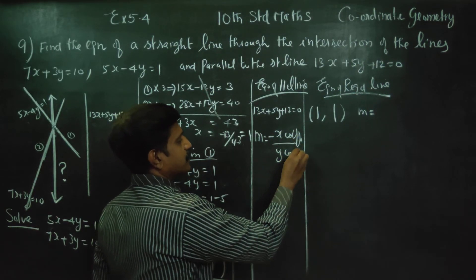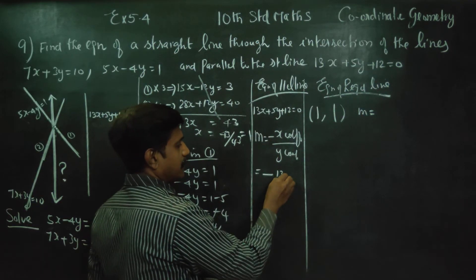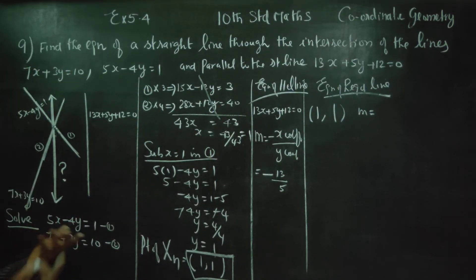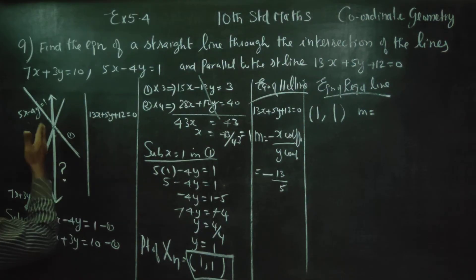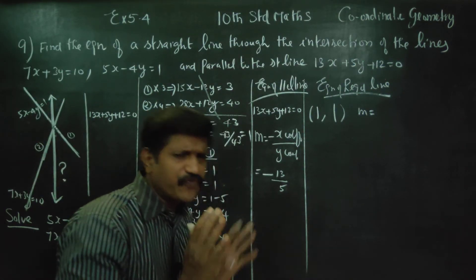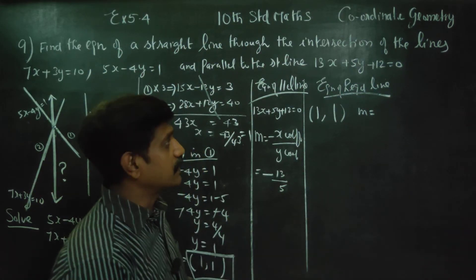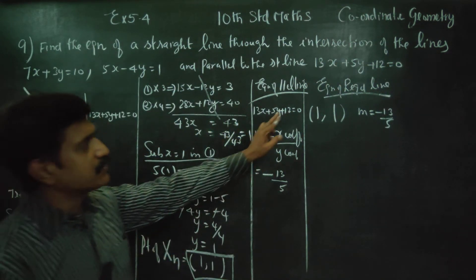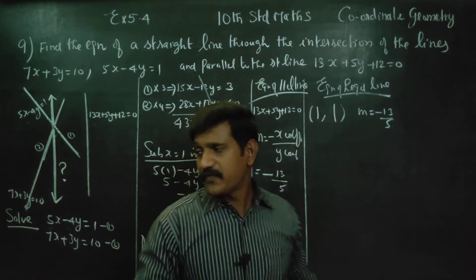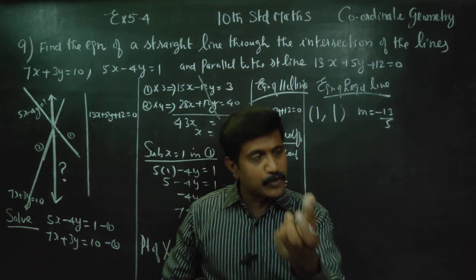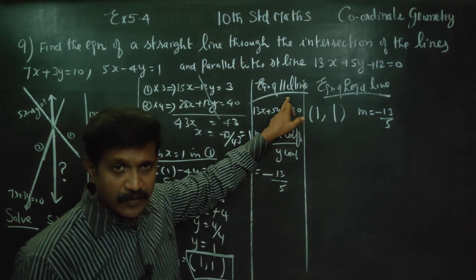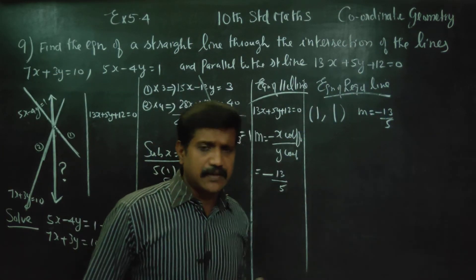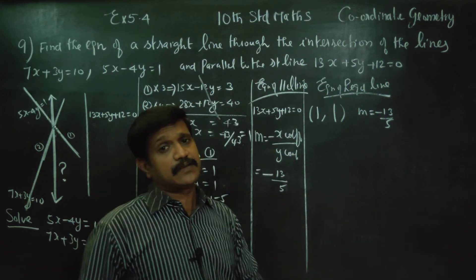For the parallel line 13x plus 5y plus 21 equals 0, the x coefficient is 13 and the y coefficient is 5. The slope is already known — for parallel lines, the slope is very close; parallel lines have the same slope. So the required line's slope is minus 13 by 5.